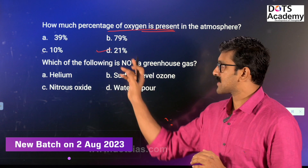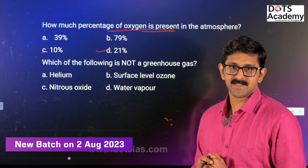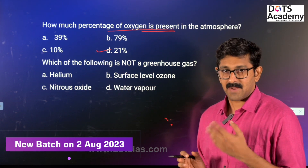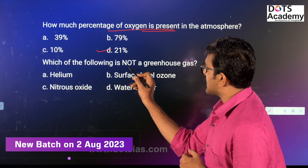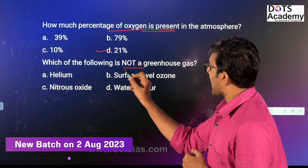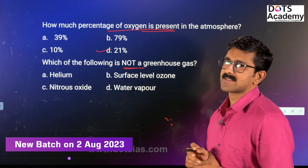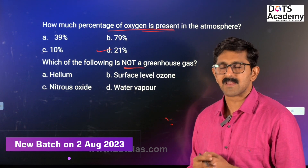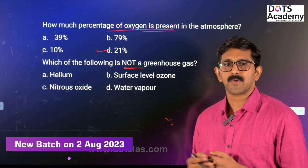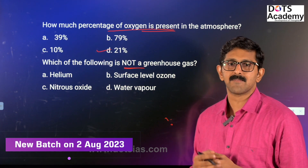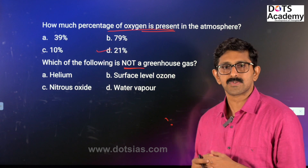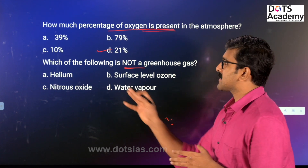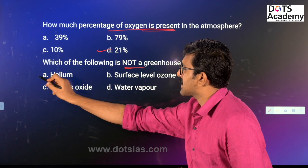Question 2: Which of the following is NOT a greenhouse gas? The greenhouse gases are water vapour, carbon dioxide, methane, nitrous oxide, and ozone. The answer is helium — helium is not a greenhouse gas.